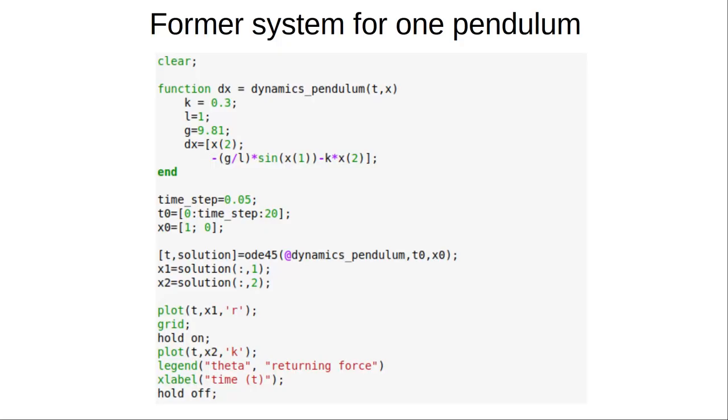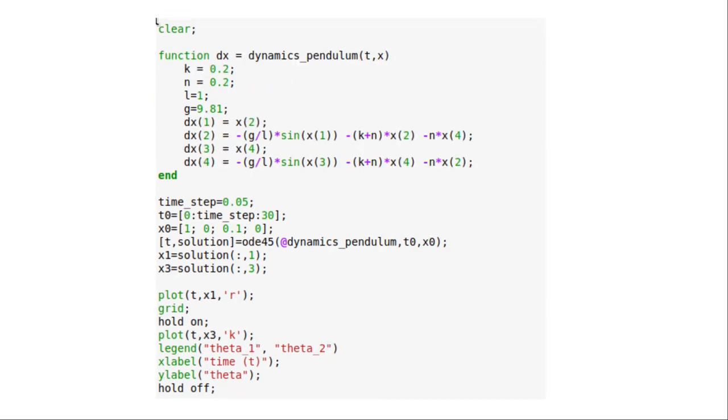Recall that the former equation determined the angle of the single pendulum. We can use that again but we can make a small change to say that each pendulum dampens every other pendulum. Let's define a nudge parameter for each pendulum to achieve that dampening effect on the other pendula.